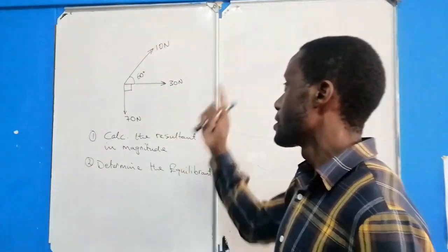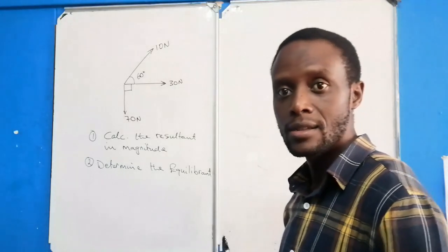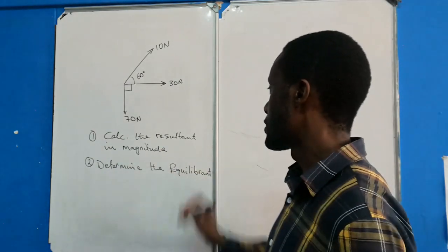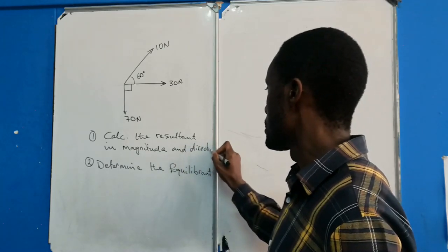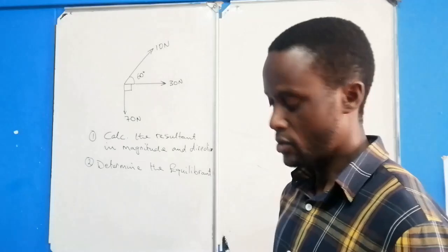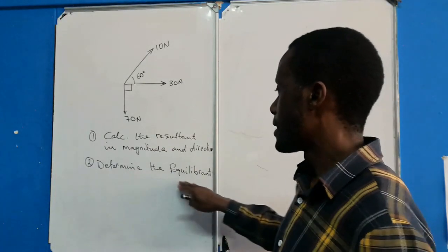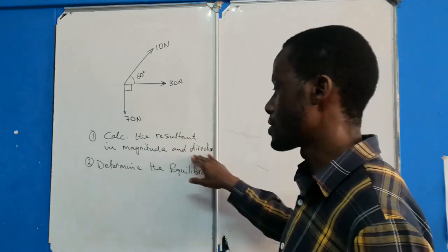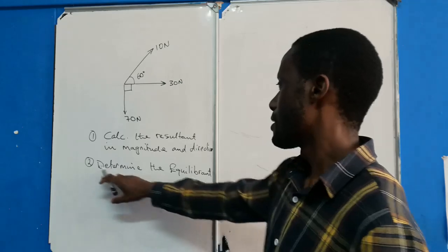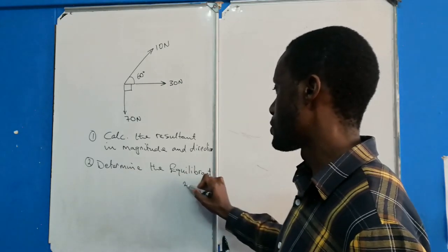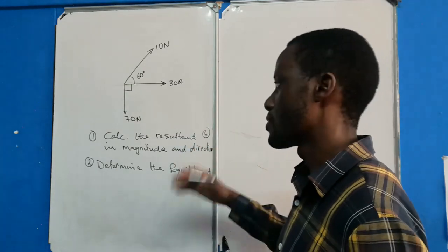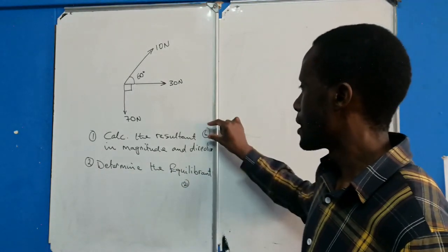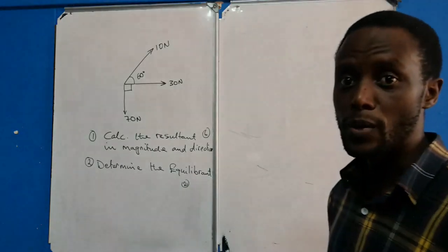Here's a question regarding forces. The question says: calculate the resultant in magnitude and direction — remember forces are vectors, they have magnitude and direction. The other part says determine the equilibrium. Equilibrium is a force equal to the resultant but acting in the opposite direction. This equilibrium part carries fewer marks, maybe one or two, while the resultant calculation carries about six marks. If a question asks only for equilibrium, it could carry all eight marks combined.